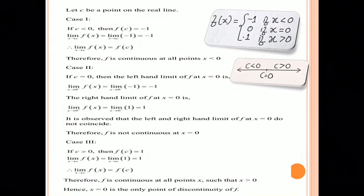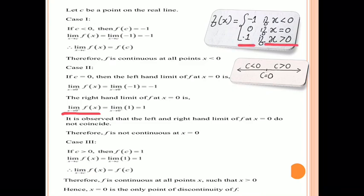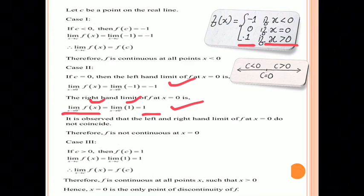The right-hand limit — limit x approaches 0 positive of f(x) — equals 1, since for x > 0 f(x) = 1. Since the left-hand limit (−1) is not equal to the right-hand limit (1), f is not continuous at x = 0.